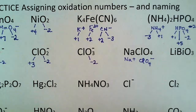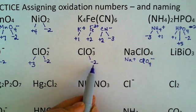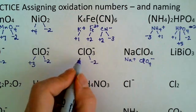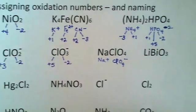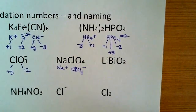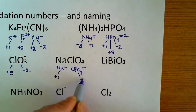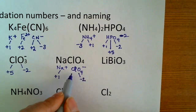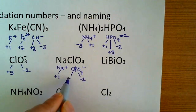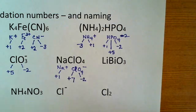Oxygen is minus 2, I keep starting with oxygen. Three times a minus 2 is a minus 6. Overall minus 1, so this one must be plus 5. The sodium is an ion, so that's plus 1. Oxygen is minus 2, four of them is minus 8. Overall minus 1, so chlorine here must be plus 7. Do the check.